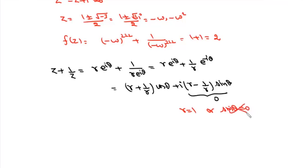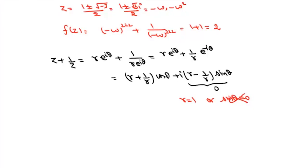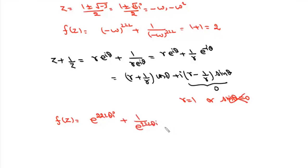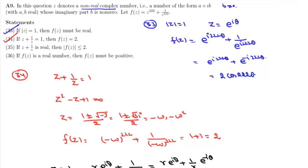Since sinθ cannot be zero (z is non-real), we must have r = 1. Then f(z) = e^(i·222θ) + e^(-i·222θ) = 2cos(222θ), which satisfies |f(z)| ≤ 2. Therefore, statement 35 is also correct.